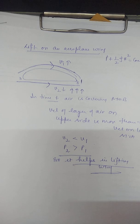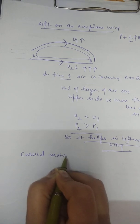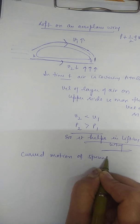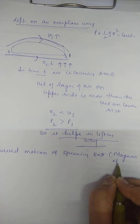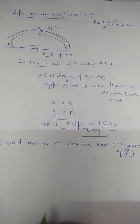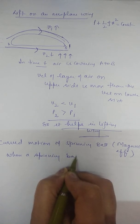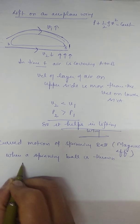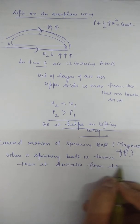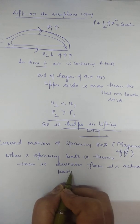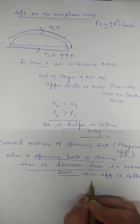The next application is the Magnus effect, also called the curved motion of a spinning ball. When a spinning ball is thrown, it deviates from its actual path. This effect is called the Magnus effect.